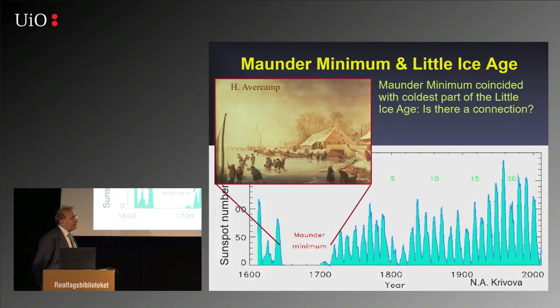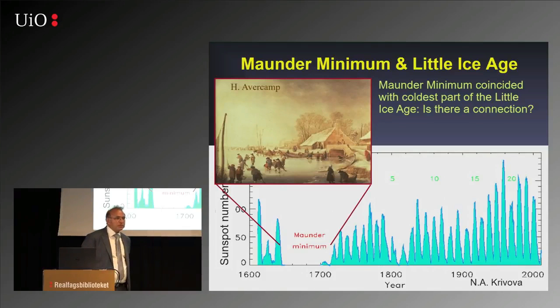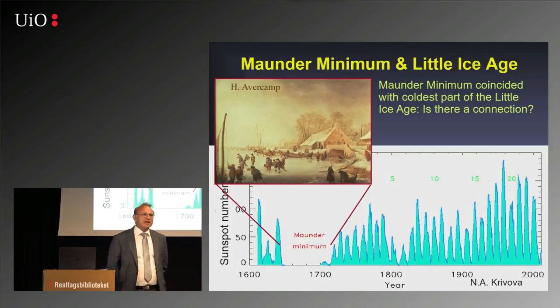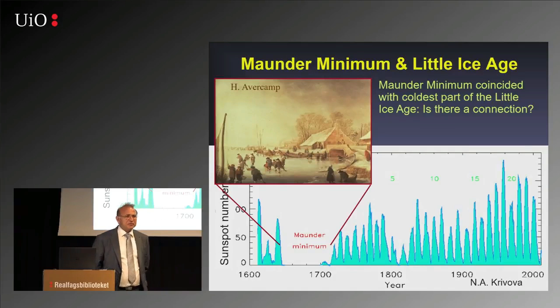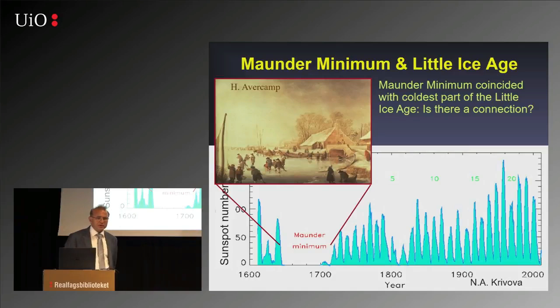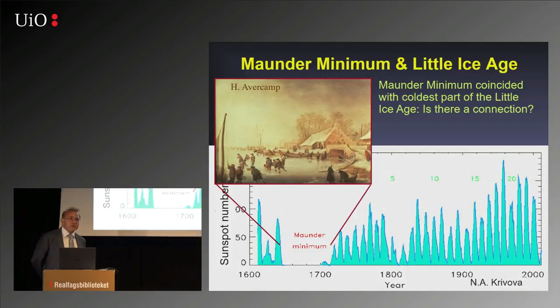The Little Ice Age was a time of bitter cold and hunger, and lots of people died. It didn't help that the Thirty Years' War was also going on and people were killing each other. But it was not a happy time.